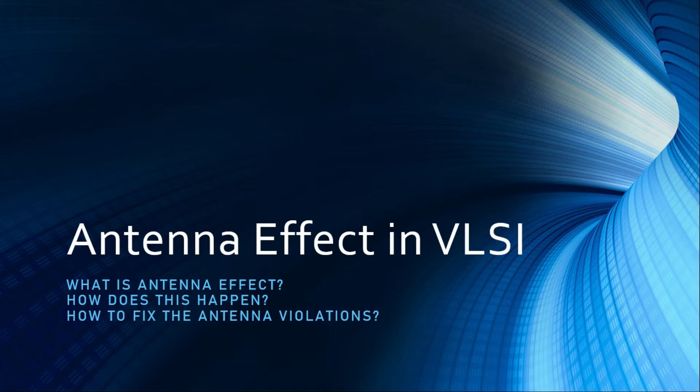Antenna effect is a phenomenon that arises during the intermediate steps of CMOS manufacturing process. If not taken into consideration, this can be really hazardous. Antenna effect can also cause yield and reliability problems. Here the word antenna does not really mean the device that converts electrical radiations into magnetic fields that we use in communication systems. So in this video we are going to see what is antenna effect, how does it happen, and how to fix the antenna violations.